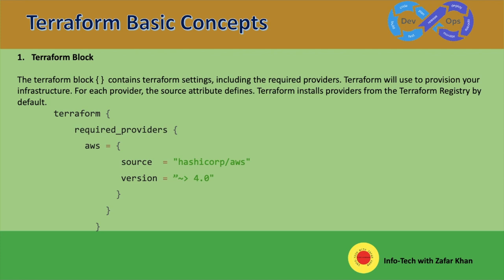The version attribute is optional — you can set it or not. But I recommend using it to constrain the provider version so that Terraform does not install a version of the provider that does not work with your configuration. If you do not specify the provider version, Terraform will automatically download the most recent version during initialization.